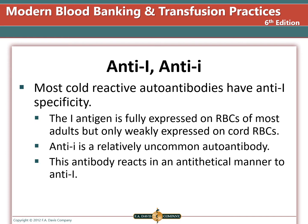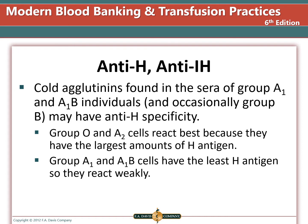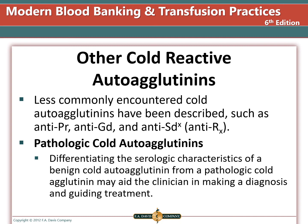Most cold reactive autoantibodies have an anti-I specificity. The I antigen is fully expressed on red blood cells of most adults but only weakly expressed on cord red blood cells. The anti-i is a relatively uncommon autoantibody that reacts in an antithetical manner to the anti-I. Cold agglutinins found in the serum of group A1 and A1B individuals may have an anti-H specificity. Group O and A2 cells react best because they have the largest amount of H antigens, while group A1 and A1B cells have the least H antigens and would react weakly. Other less commonly encountered cold agglutinins include anti-Pr, anti-Gd, and anti-Sdx (also called anti-Rx).